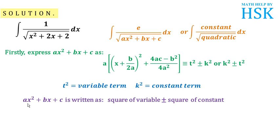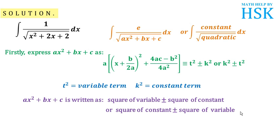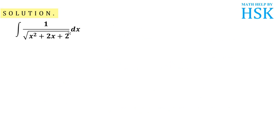This means that ax squared plus bx plus c is written as the square of a variable plus or minus the square of a constant, or the square of a constant plus or minus the square of a variable. To summarize: we have to express ax squared plus bx plus c as the square of a constant plus or minus the square of a variable. Coming back to the question, we take the quadratic term x squared plus 2x plus 2.